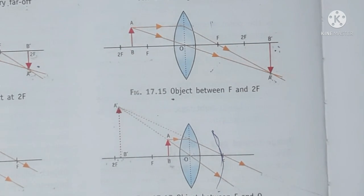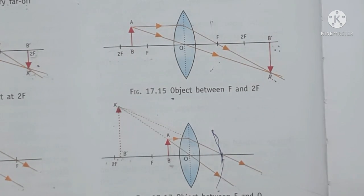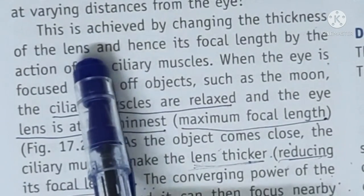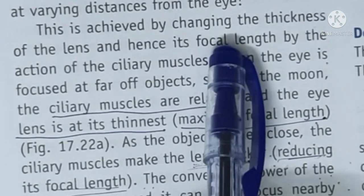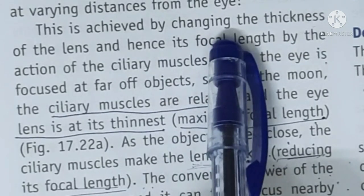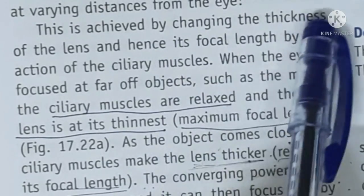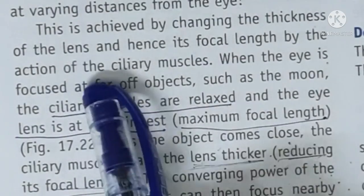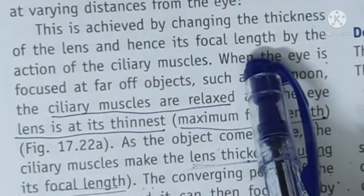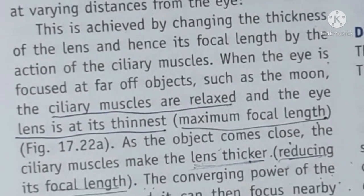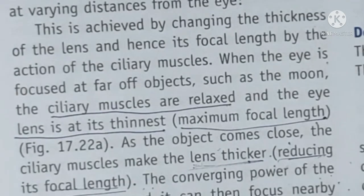Toh door ka object ka toh light rays aarehi hain woh retina pe meet kar jar rahi hain. Par jo paas ka object hai, usme light rays retina ke baad meet kar rahi hain. Toh phir aapki jo lens hai aankh mein, woh kaisi aapko door ka aur paas ka dono ka dekhne mein madad karta hai? Toh the answer is: aapka jo lens hai aankh mein woh accommodate karta hai — matlab woh change karta hai — kya change karta hai? Lens ki — yahan phir hum lens ki thickness ko change karta hai. Matlab ki jo lens hai woh apni thickness ko change karke apni focal length ko change kar deta hai. Aur focal length ke change hone se, jo image hai chahe woh door ka dekh rahe ho ya paas ka dekh rahe ho, har baar image retina pe hi form hoti hai.